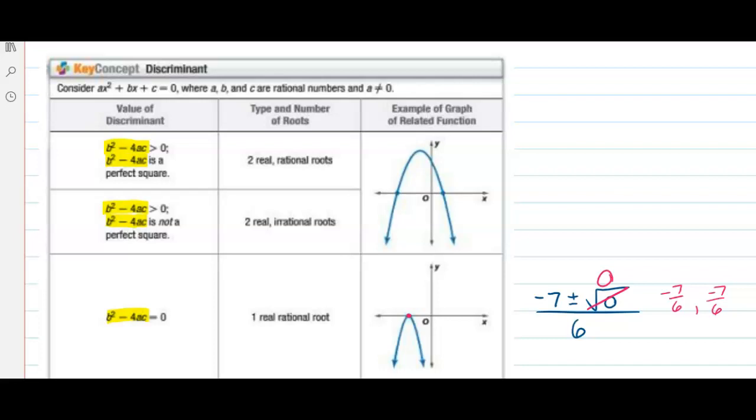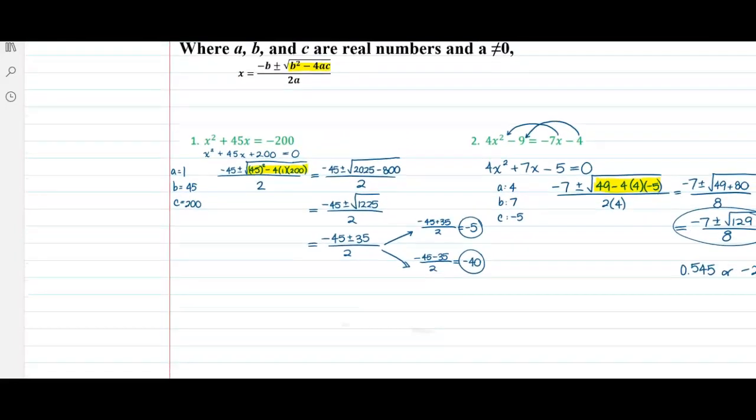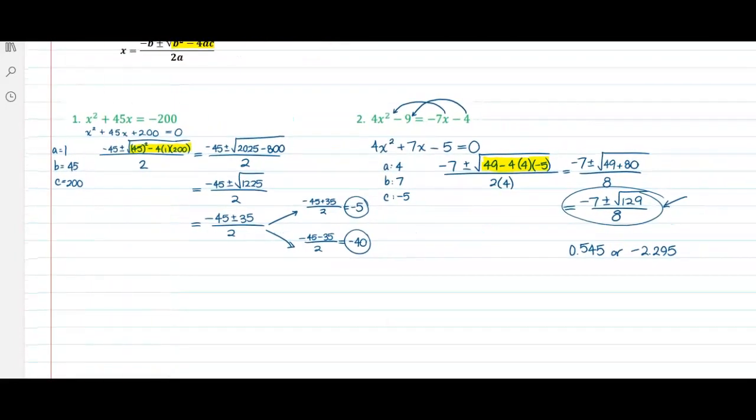So again, let's look at the two examples we've done so far. The discriminant was positive in both examples.